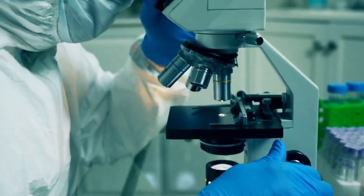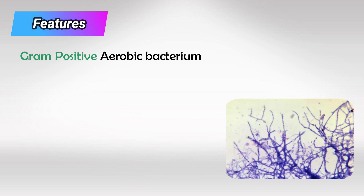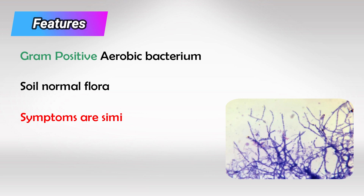Welcome back. In this video we'll talk about Nocardia infection. This is a gram positive aerobic bacteria and it forms long filaments and branches just like fungi. This bacteria is mainly found in dirt and soil, and the infection very closely resembles TB.